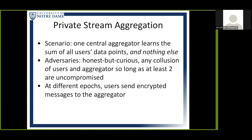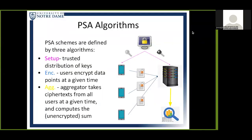At different epochs, users will send encrypted messages to the aggregator. Private stream aggregation schemes are defined by three algorithms. Setup involves the trusted distribution of keys by a trusted third party, secure multi-party computation, or some other method. Encryption shows that users will encrypt data points at some given time. Those ciphertexts will then be sent to the aggregator, where the aggregator will aggregate these ciphertexts and will then learn the plaintext sum of all users' inputs, but will not learn any other information about user data.